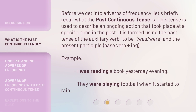Before we get into adverbs of frequency, let's briefly recall what the past continuous tense is. This tense is used to describe an ongoing action that took place at a specific time in the past. It is formed using the past tense of the auxiliary verb 'to be' — was, were — and the present participle, base verb plus -ing.